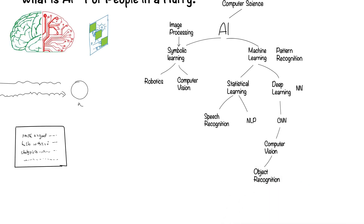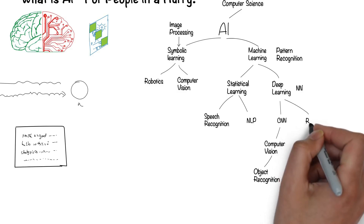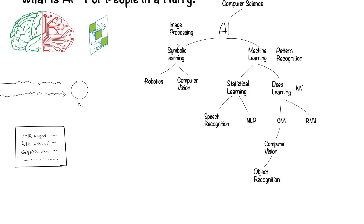Humans can remember the past, like what you had for dinner last night — well, at least most of you. We can get a neural network to remember a limited past. This is a recurrent neural network.